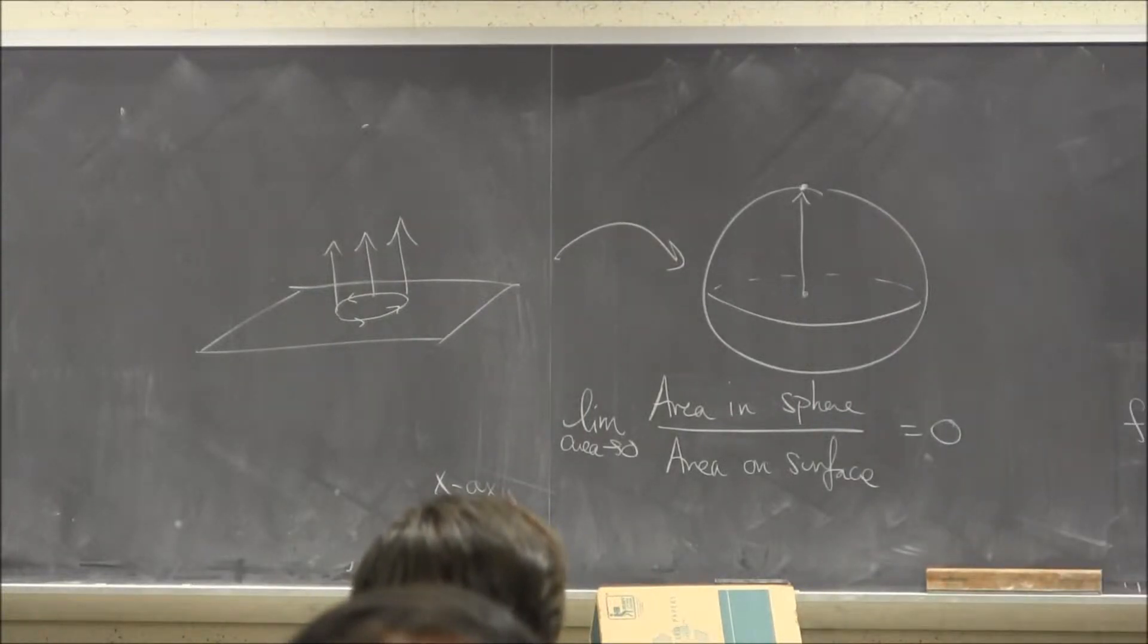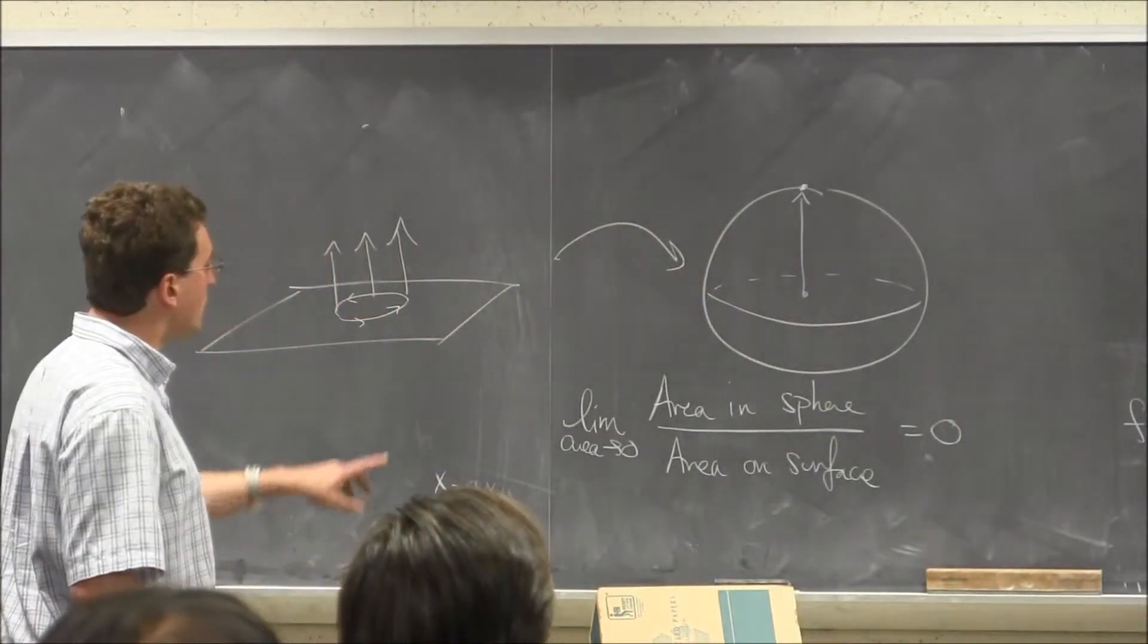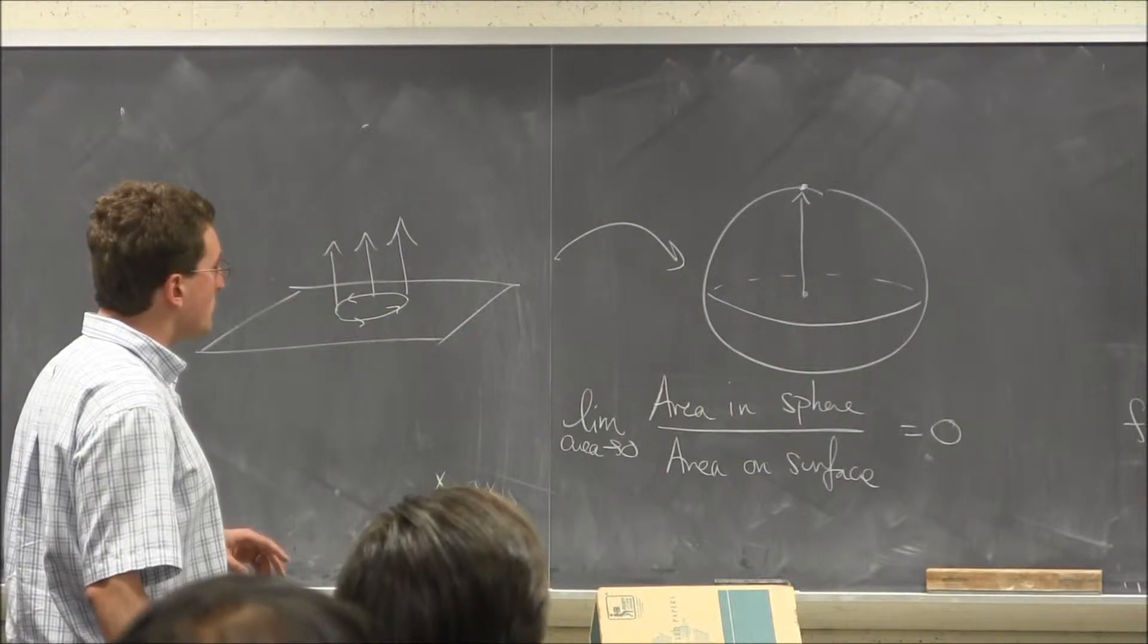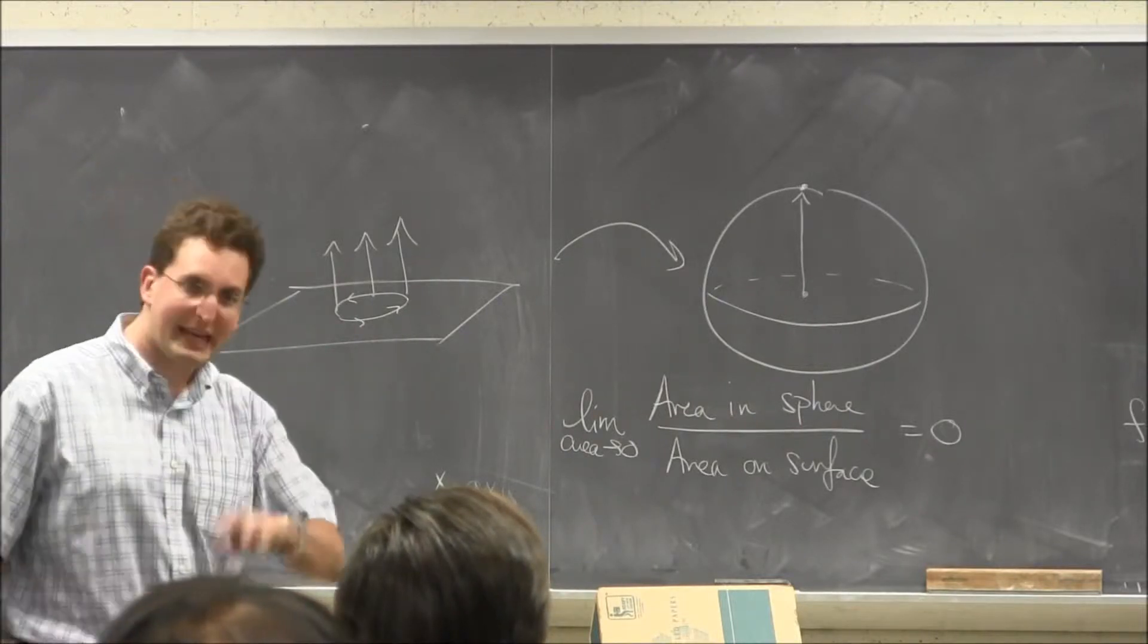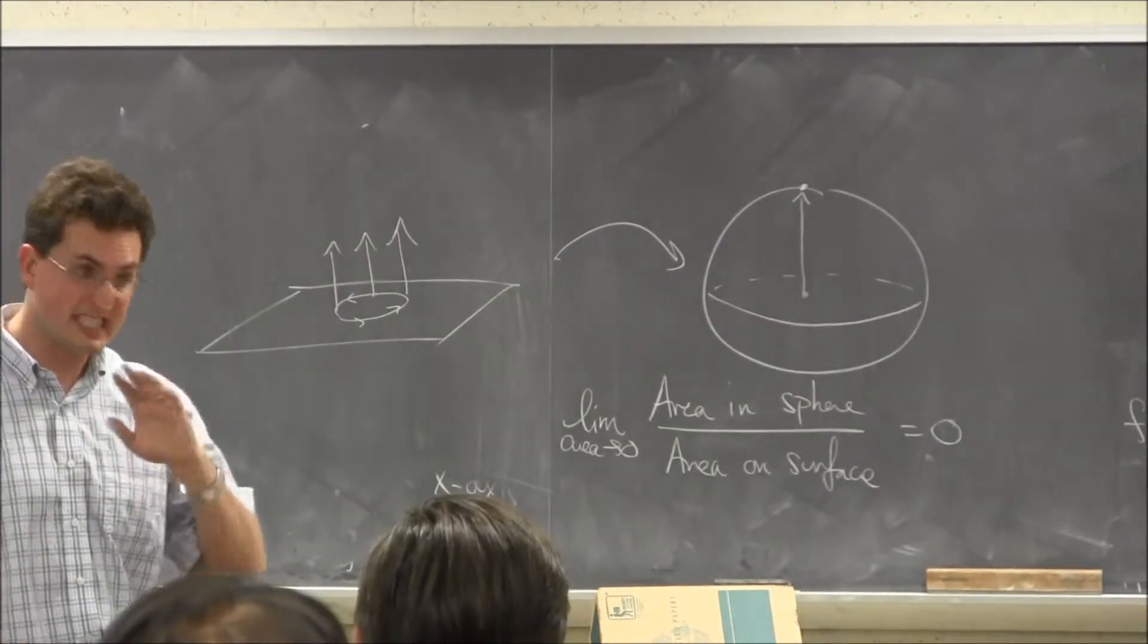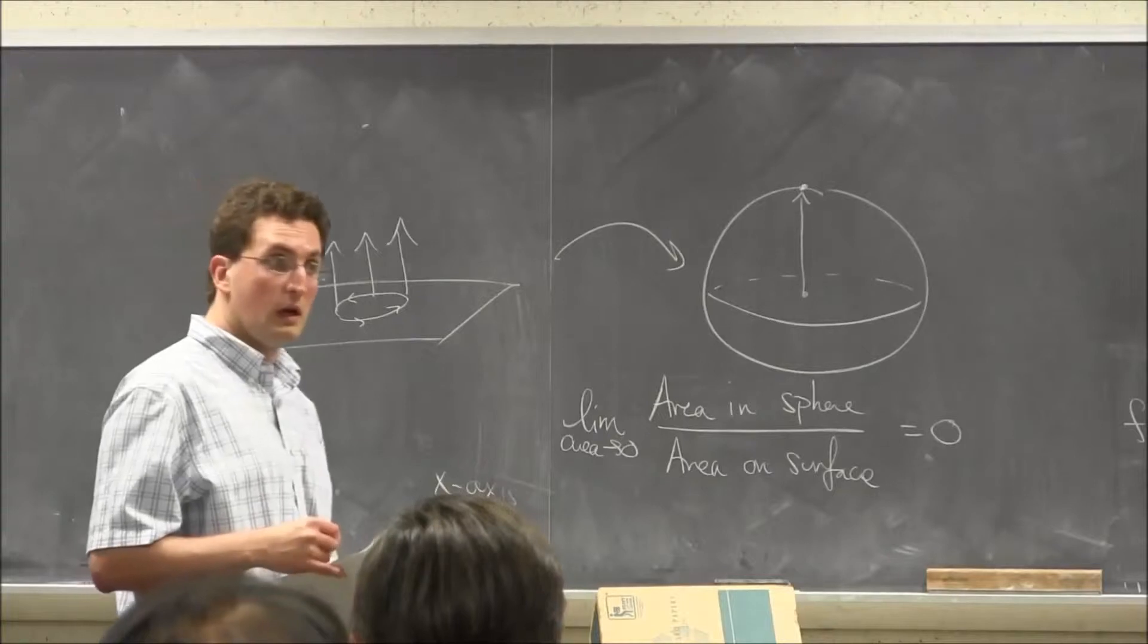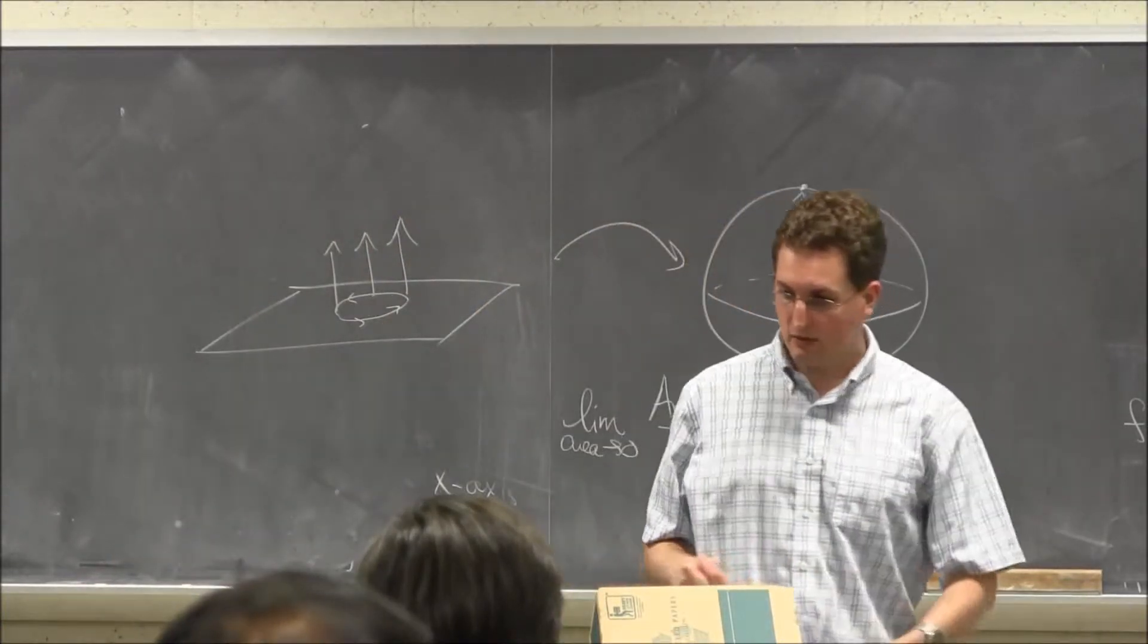This is called the curvature or Gaussian curvature. This is an extrinsic way of looking at it. If I fold the paper and I do it rigidly, just to bend, it preserves this. The area is still, the limit is still zero. But now let's talk about something else.